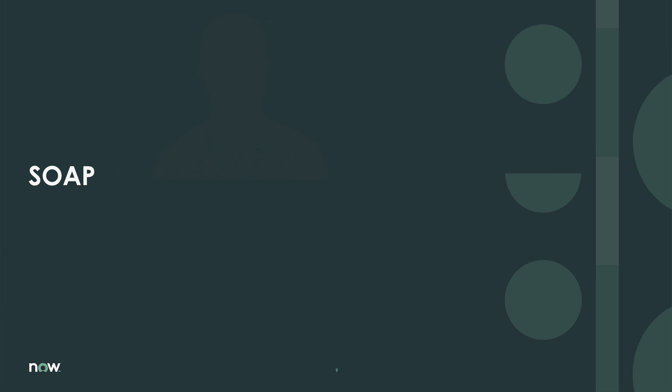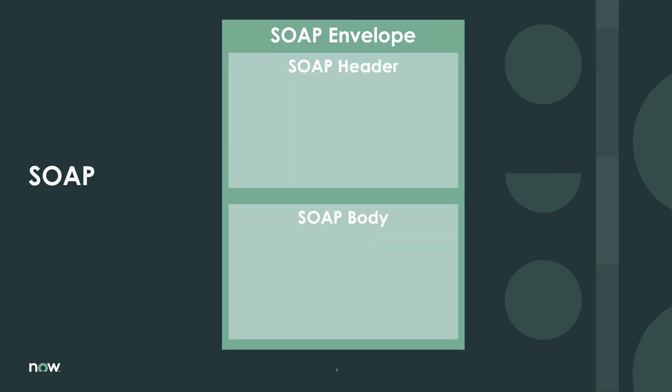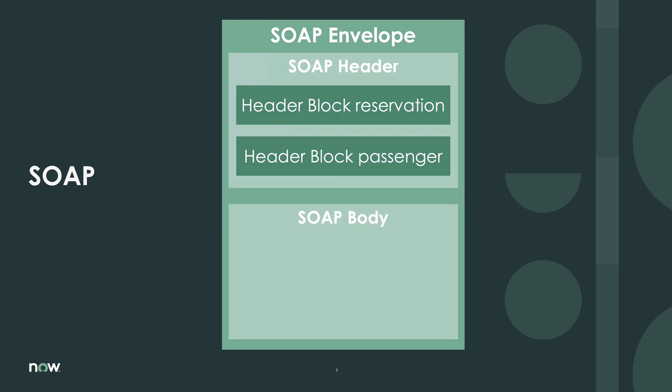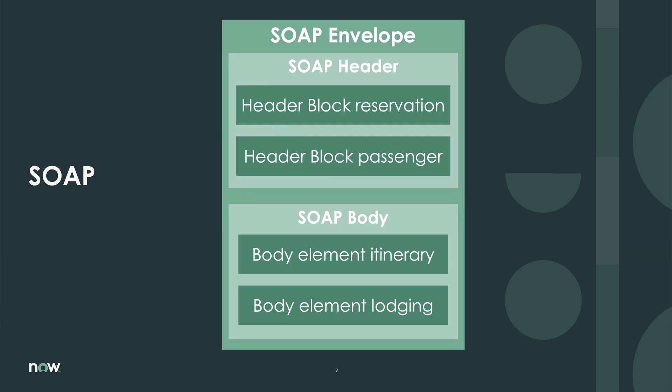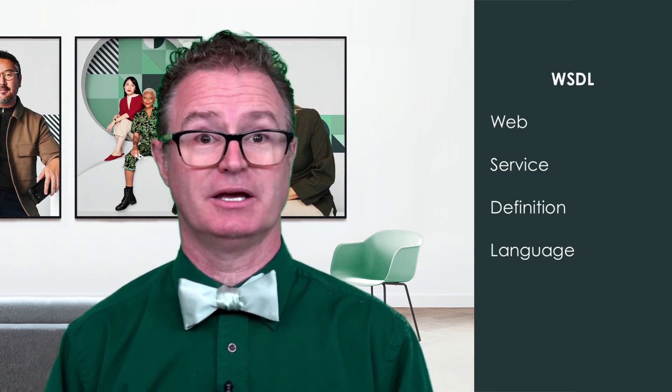SOAP is made up of an envelope, which contains a header and a body. The header contains one or more header blocks, and the body contains one or more elements. When dealing with SOAP, we'll first need to download or reference a WSDL.